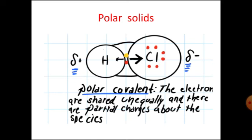Now let us study something about polar solids. You are familiar with laboratory reagents such as hydrochloric acid, H₂SO₄, HNO₃, etc. Consider the Lewis dot structure of HCl. In this, the distribution of electrons around each atom differs — around hydrogen there are 2 electrons and around chlorine there are 8 electrons. Due to this unequal distribution of electrons, the bond formed between these two atoms is called a polar covalent bond.